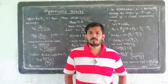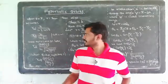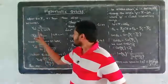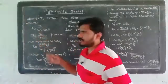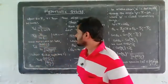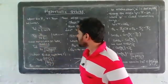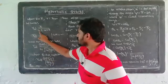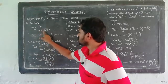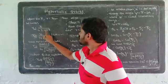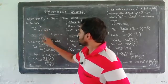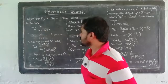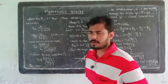Planetary motion of celestial objects is described by the orbit equation: R is equal to R0 divided by 1 minus epsilon cos theta.